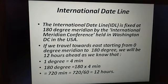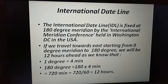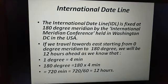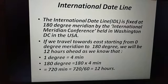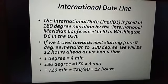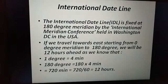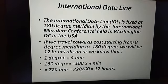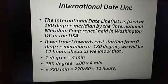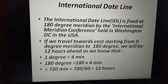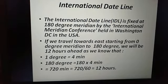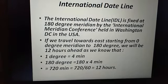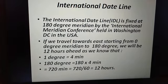We will always be 12 hours ahead of the 0 degree meridian when we move to 180 degrees, because 1 degree equals 4 minutes. So 180 degrees into 4 minutes equals 720 minutes ahead, and converting 720 minutes to hours by dividing by 60 gives us 12 hours. So we will be 12 hours ahead.